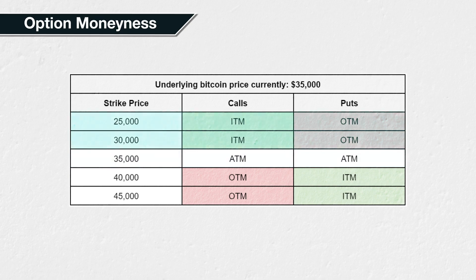For any strike below the current Bitcoin price, calls are in the money and puts are out of the money. For any strike price above the current price of Bitcoin, calls are out of the money and puts are in the money.